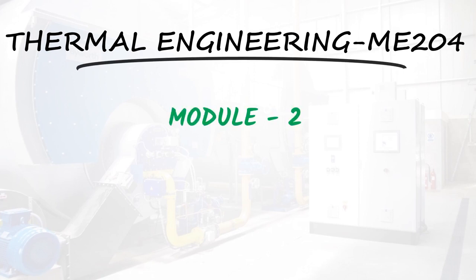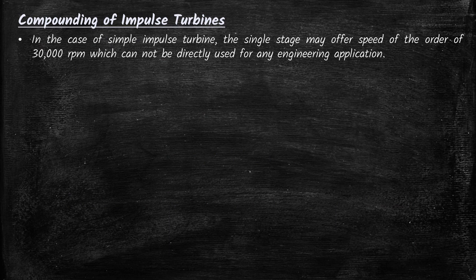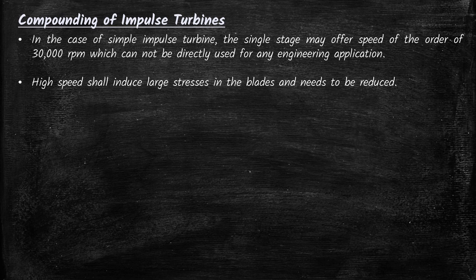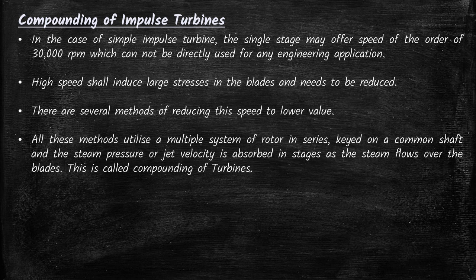Welcome back to the next lecture of thermal engineering. Today we will discuss from the second module the compounding of impulse turbines. In the case of a simple impulse turbine, a single stage may offer a speed of the order of 30,000 RPM, which cannot be directly used for any engineering applications. High speed induces large stresses in the blades and needs to be reduced. There are several methods of reducing the speed, all utilizing a multiple system of rotors in series keyed on a common shaft, where the steam pressure or jet velocity is absorbed in stages.